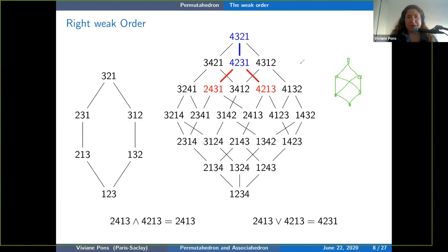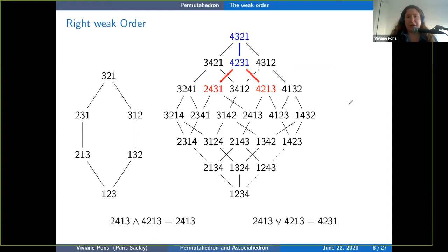To give an example of something that is not a lattice: if on my hexagon — which is a lattice — I add this extra relation and this extra relation, then if I take these two elements and look at everything smaller than both of them, I get three elements with no unique maximal element. This is the smallest example of something that is not a lattice.